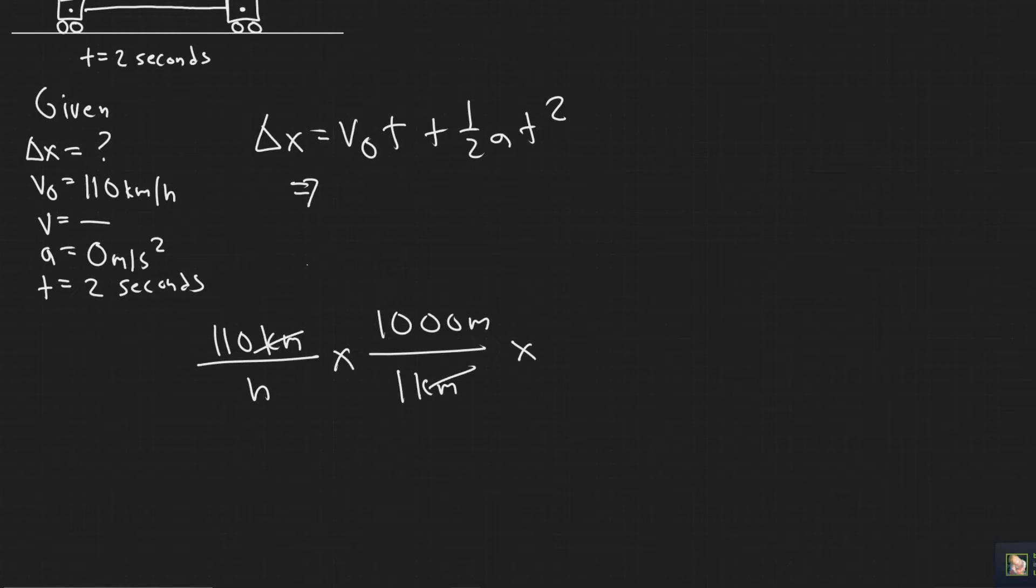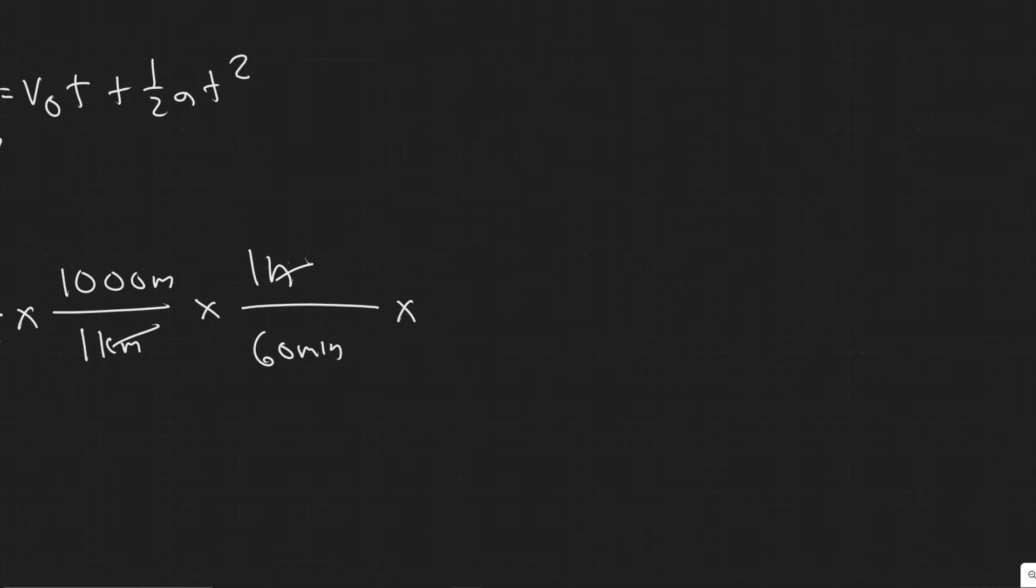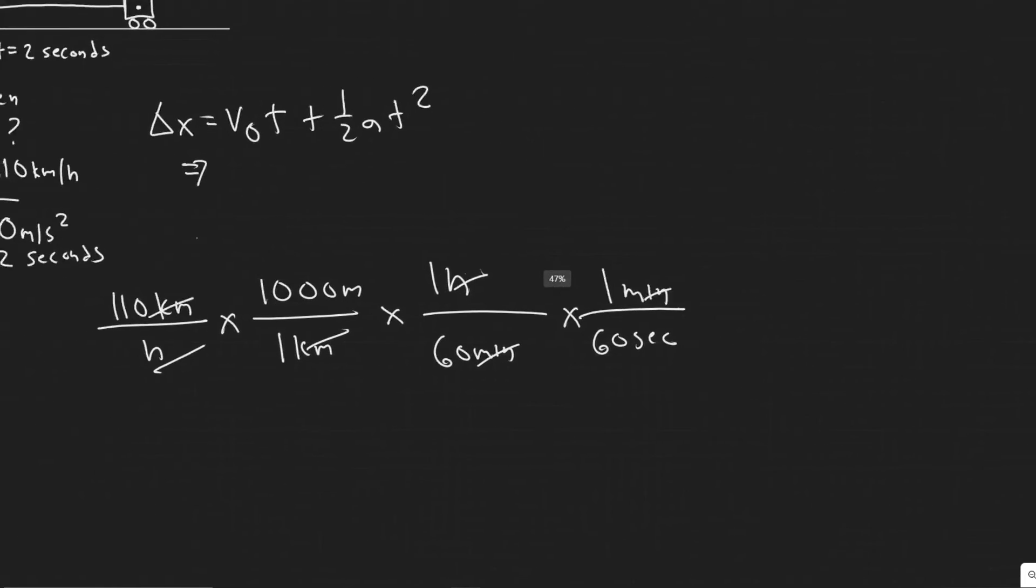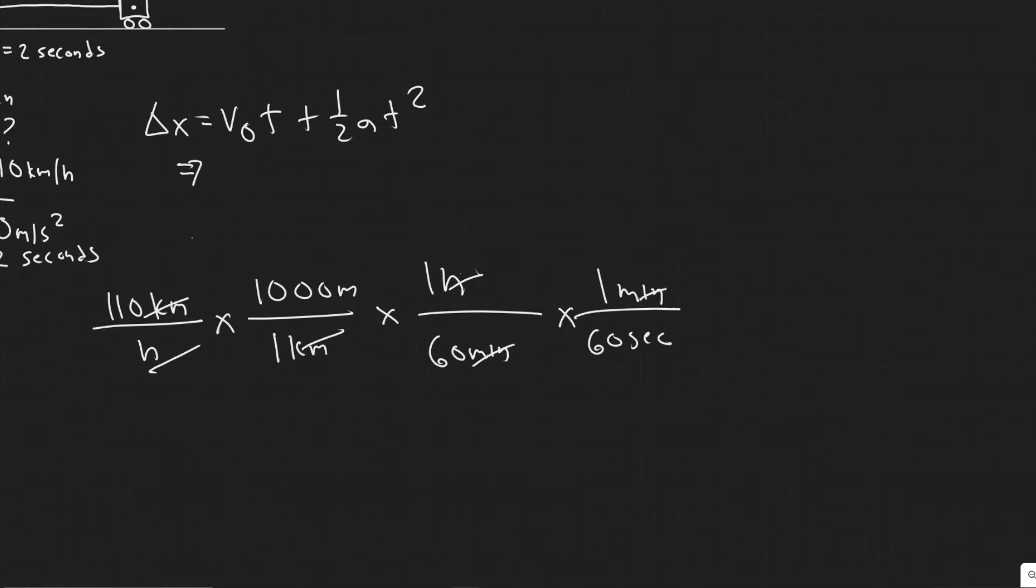Now we have it in meters per hour, but we want it in meters per second. So we have to convert hours to seconds. So you should know one hour is 60 minutes. So now we have it in meters per minute. And now we got to convert minutes to seconds. But one minute is the same as 60 seconds. So your minutes will cancel.